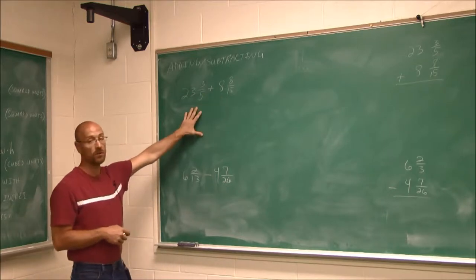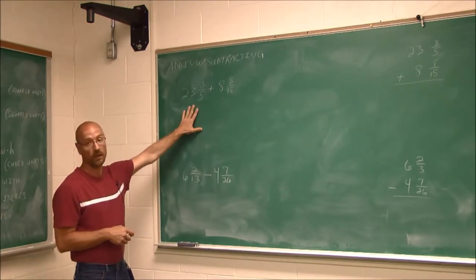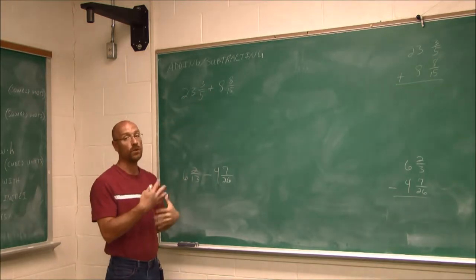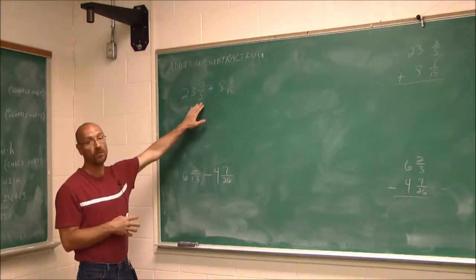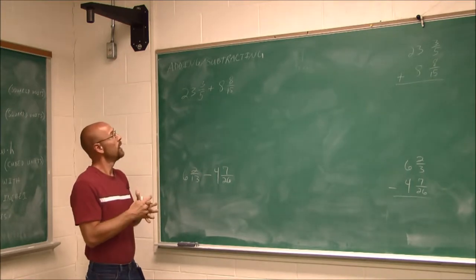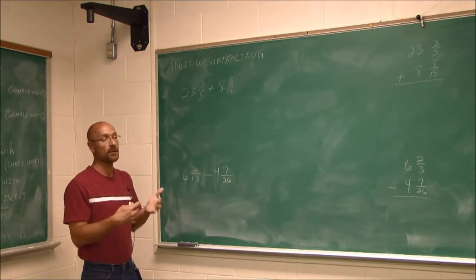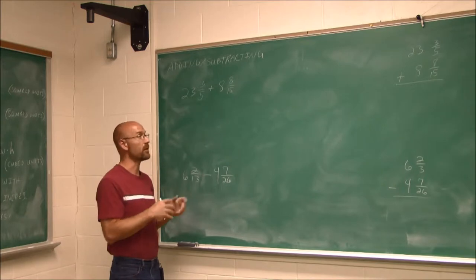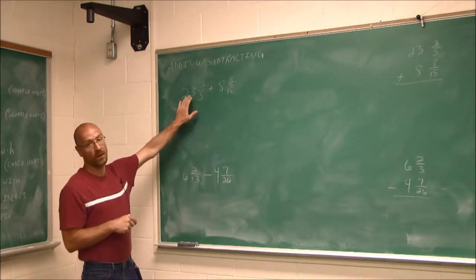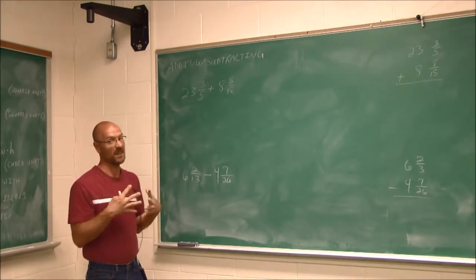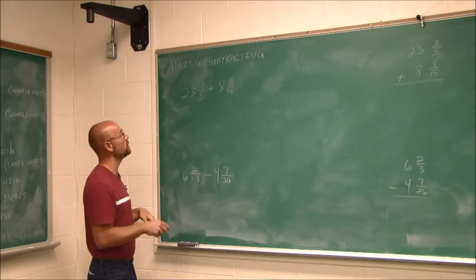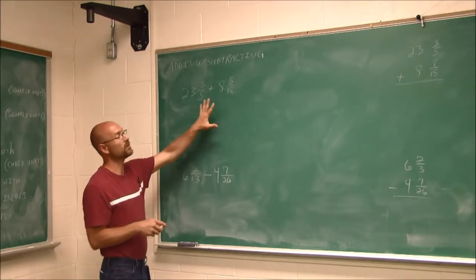In the first two examples, we're going to do the problems horizontally. When we have mixed numbers, we could write them as improper fractions, find a common denominator, and then add them together, and then work it backwards to get our mixed number. When dealing with large numbers like this, the numbers can get a little too big and out of control, so what we can do is separate them.